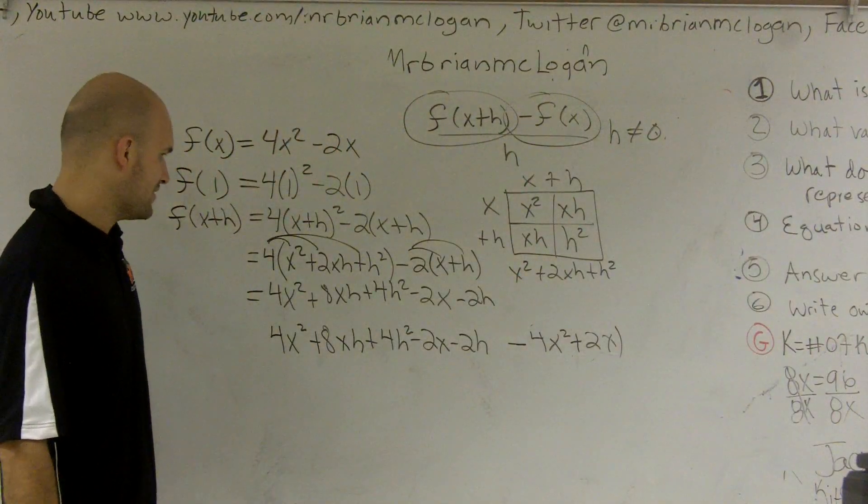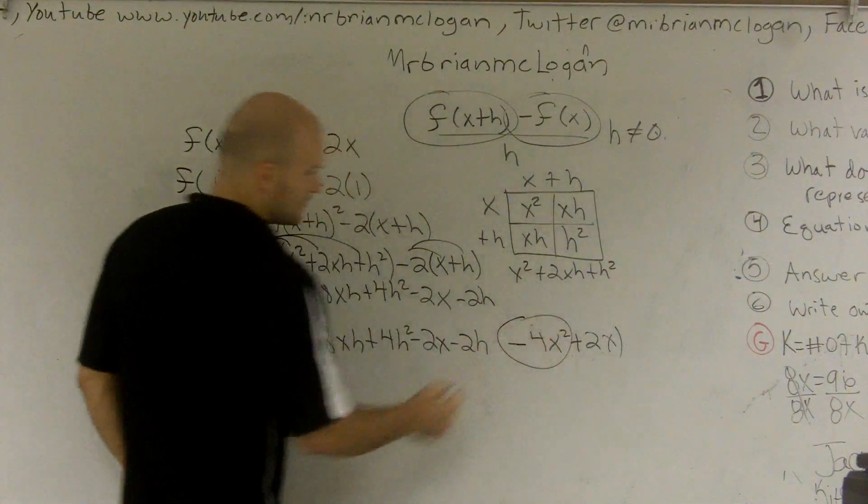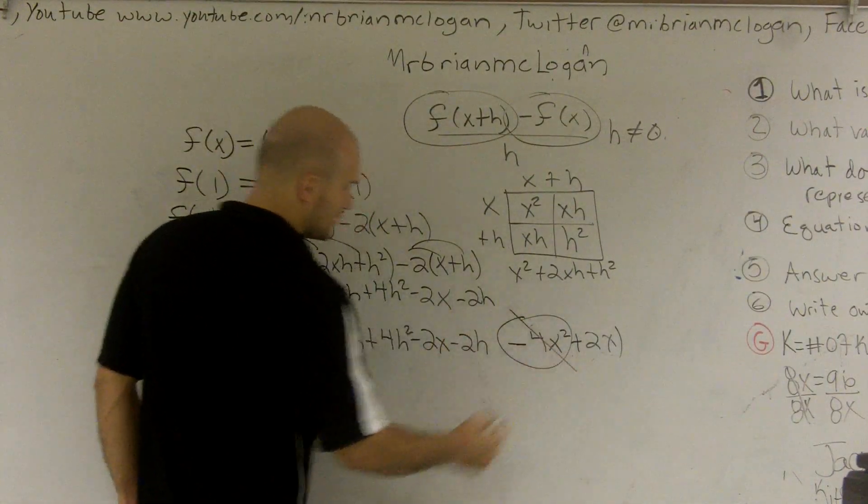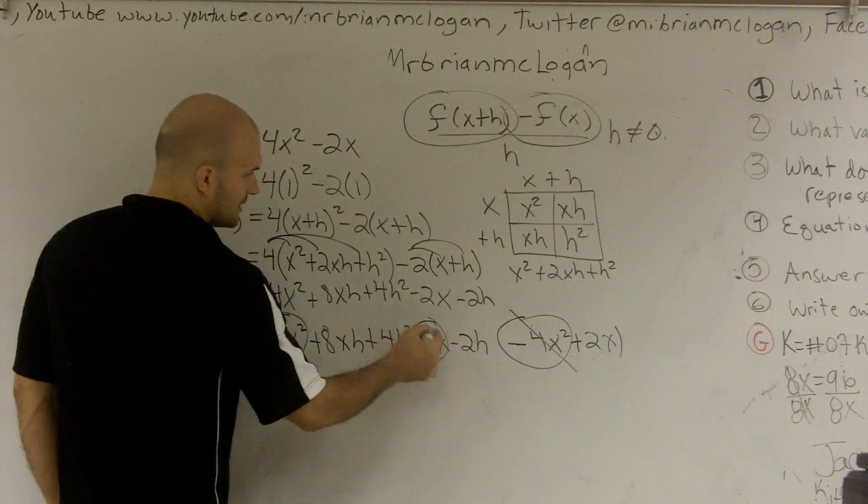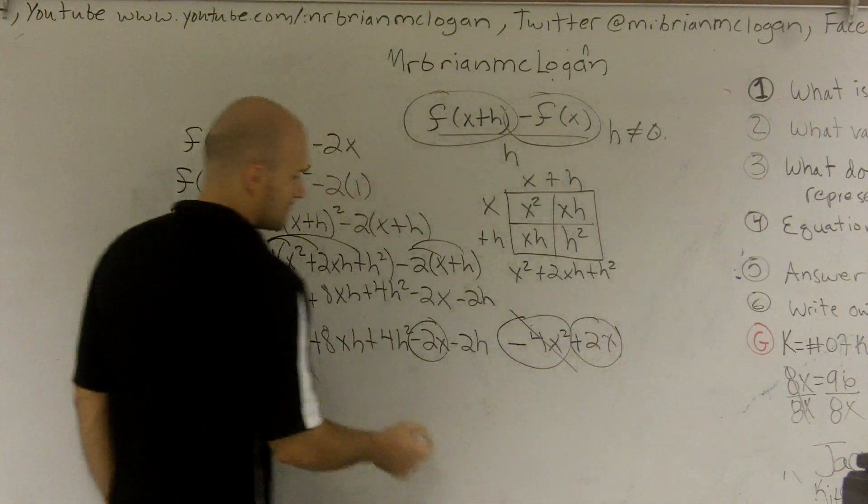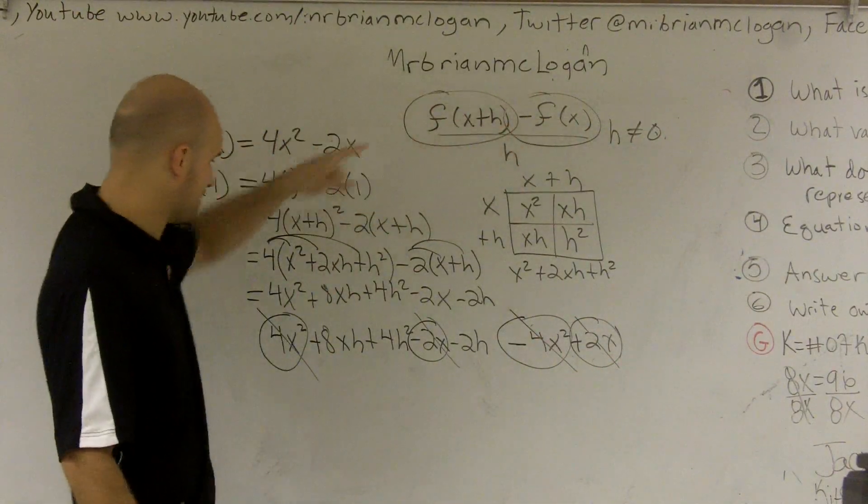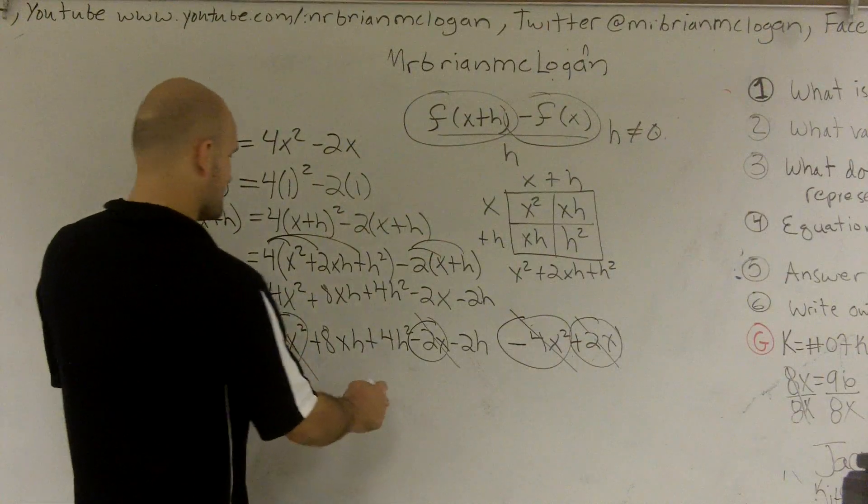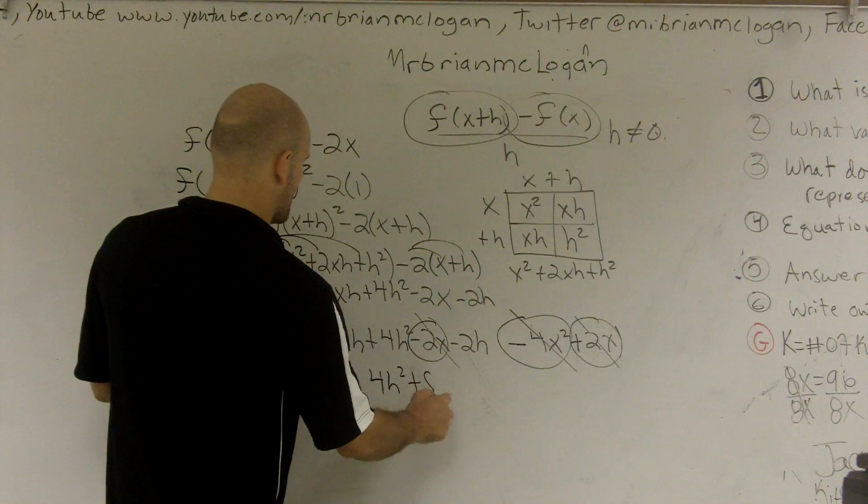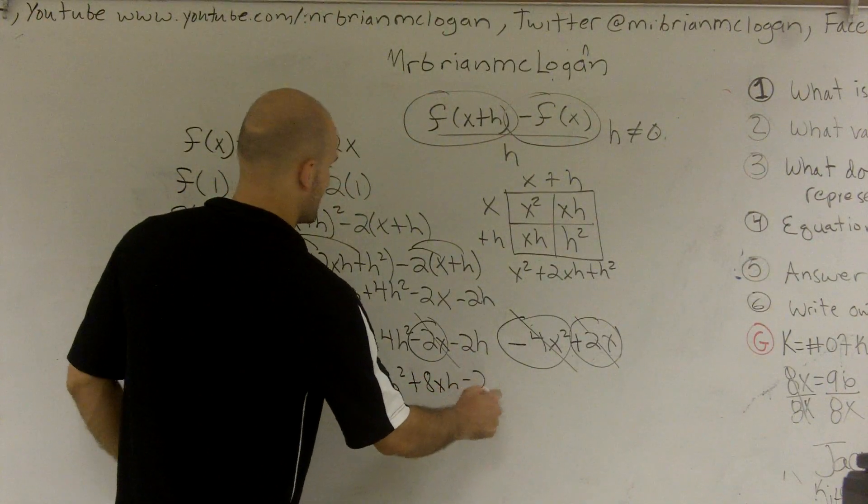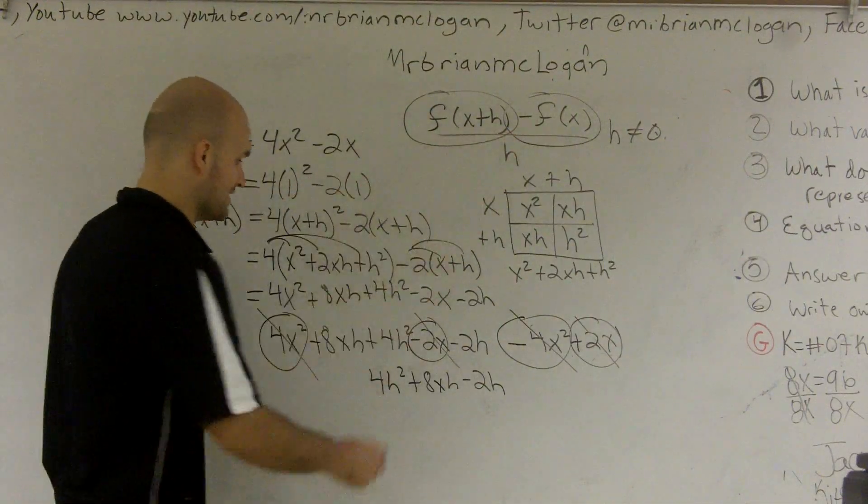Well, what we're going to do, and what you can see is, those are opposites, right? Those cancel out. Got me? These are opposites. These cancel out. So when I finish up this top here, I'm only left with 4h squared plus 8xh minus 2h. Follow me. Then we've got to put it over h.